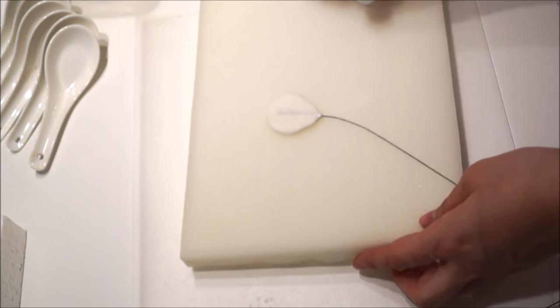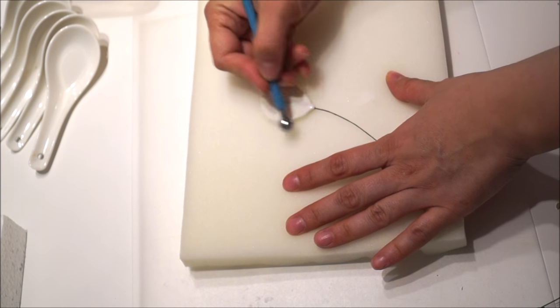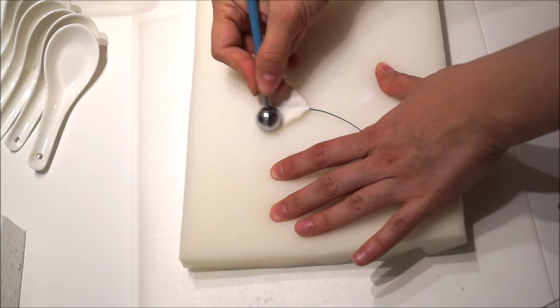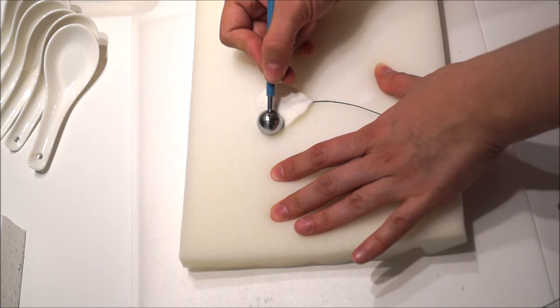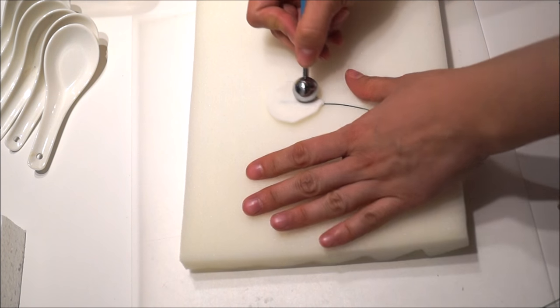Transfer your petals onto your foam mat and using your ball tool thin out the edges slightly. If your petals get sticky, simply dust a little bit of cornstarch or sugar powder.